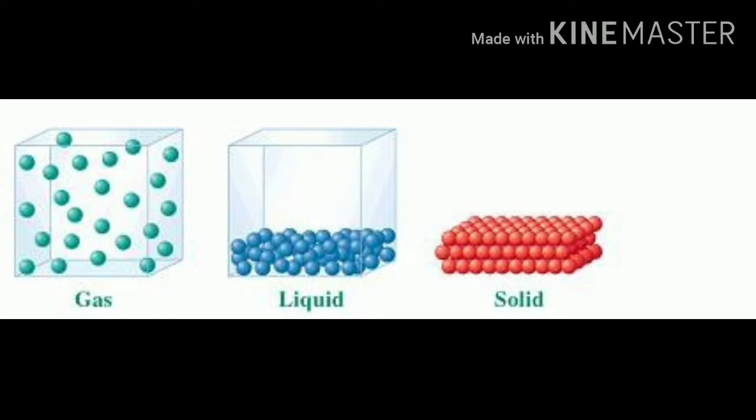Mass is a measure of how much there is in an object. Mass ka matlab hai ki kisi object ke andar kitni vastu bhari hui hai, kitna wo object hai, kitne particle hain, that is known as mass. Air, water, rocks, plants and metal are our examples of matter.